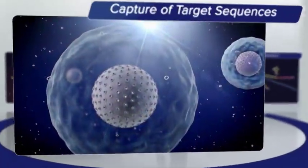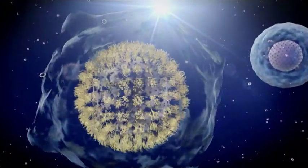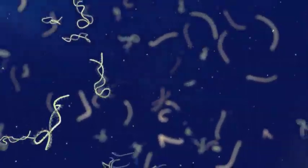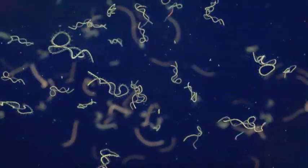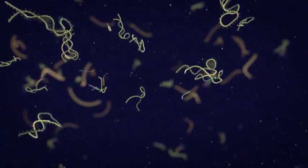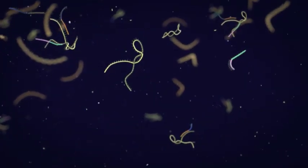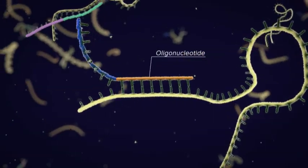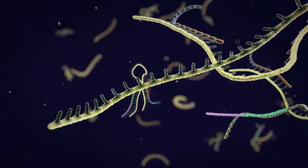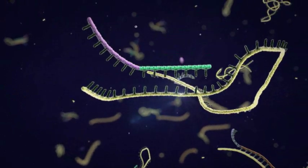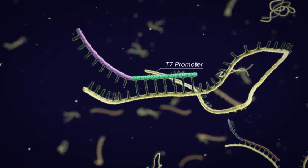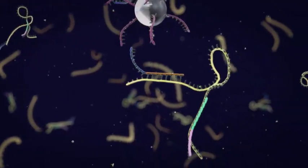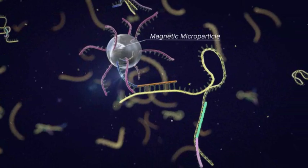Capture of target sequences. Pathogens present in a patient specimen are lysed to expose and stabilize nucleic acids. Then, specific capture oligonucleotides hybridize to regions adjacent to the target sequences. Also at this stage, oligonucleotides containing T7 promoter primers hybridize to the target sequences to facilitate subsequent amplification.